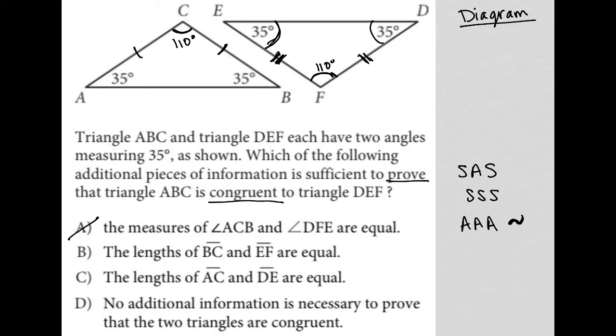Choice B says the lengths of BC and EF are equal. Okay, so now that does make a difference, right? So I can erase this and say, well, based upon answer choice B, I can put a single mark here, which means that I'd have a single mark there, which would also mean that I have SAS, right?